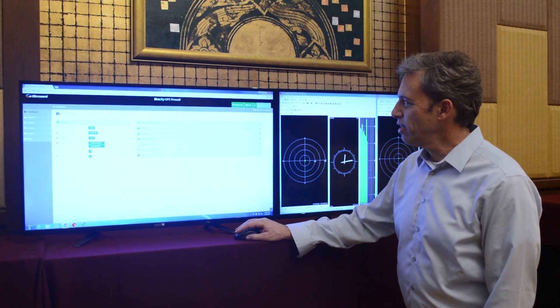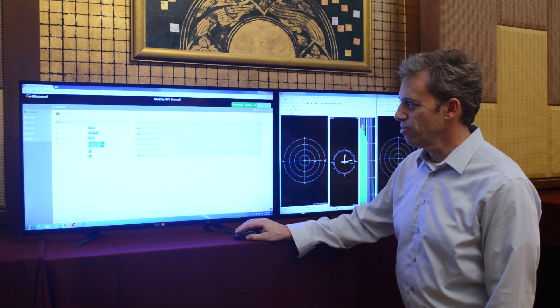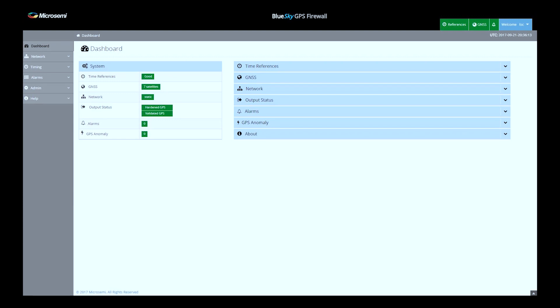First, let's take a look at the blue sky GPS firewall console. The first thing you'll notice is it's very similar looking to the console of our other products like our sync server 600 and 650. It has a set of menu items that are easily selectable along the left and then a dashboard view that gives you an instant capture of what's going on in the system in real time. Right now, things are working normally. As you can see, the console is all green with the time reference, satellite tracking, and both the validated and hardened output showing in a green status.